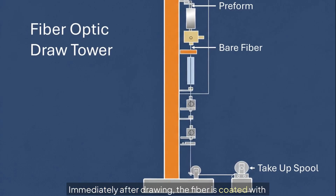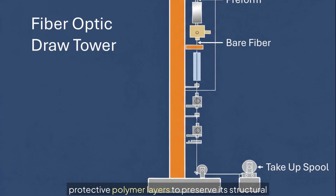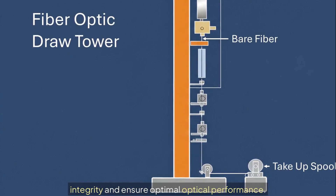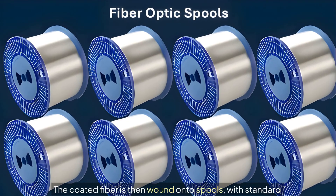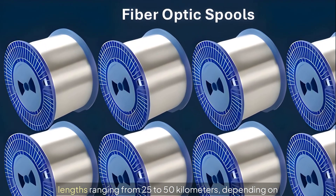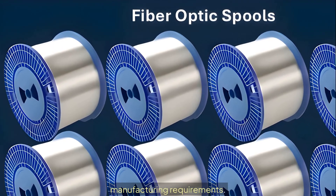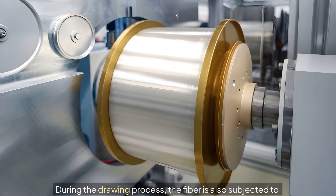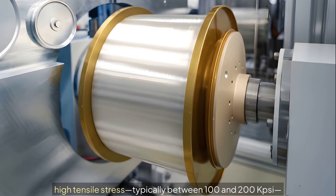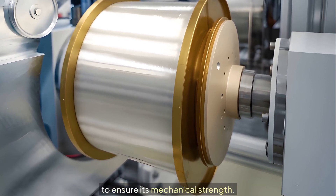Immediately after drawing, the fiber is coated with protective polymer layers to preserve its structural integrity and ensure optimal optical performance. The coated fiber is then wound onto spools with standard lengths ranging from 25 to 50 kilometers, depending on manufacturing requirements. During the drawing process, the fiber is also subjected to high tensile stress, typically between 100 and 200 kpsi, to ensure its mechanical strength.